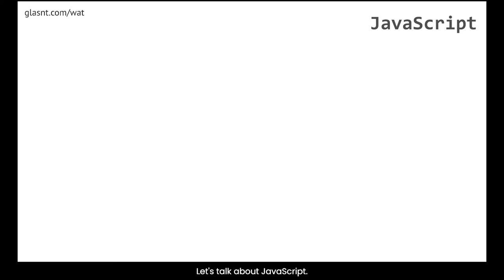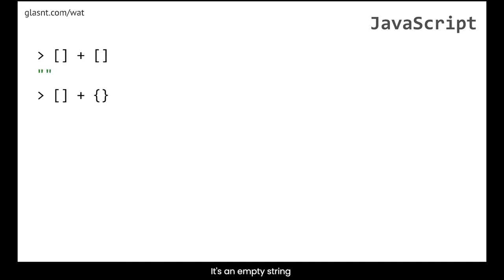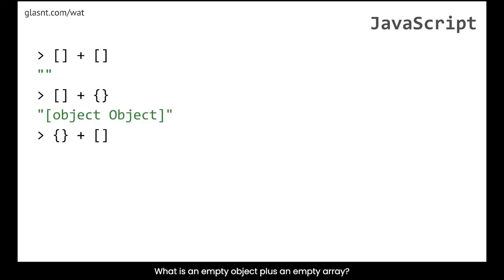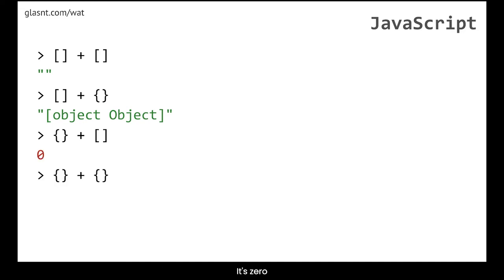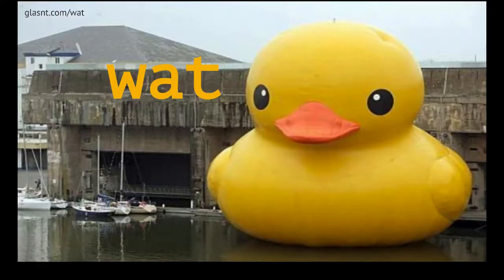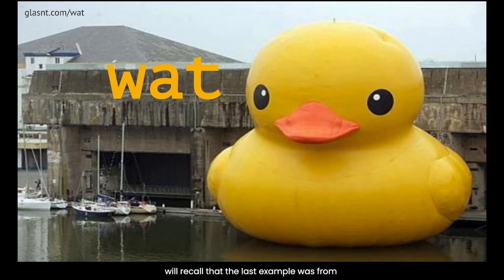In JavaScript, what is an empty array plus an empty array? It's an empty string. What is an empty array plus an empty object? It's the string 'object object'. What is an empty object plus an empty array? It's 0. What is an empty object plus an empty object? It is not a number.